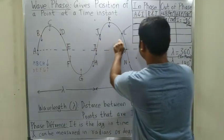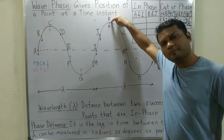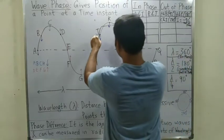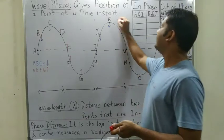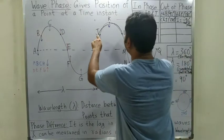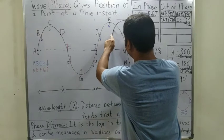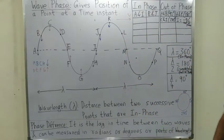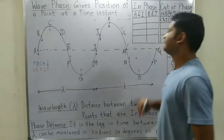The crest which is currently at K will move forward. A little later it will be above L, then M, then N, then O. So all these points — L, M, N, O — are going to move up. And P point is like H point.